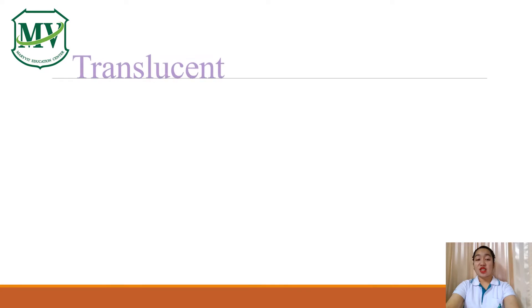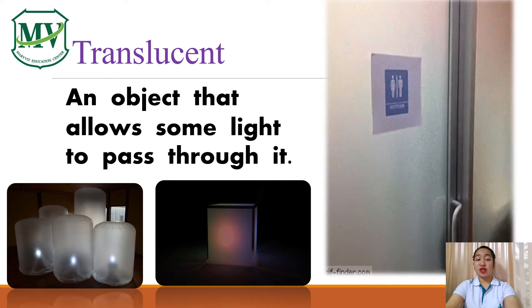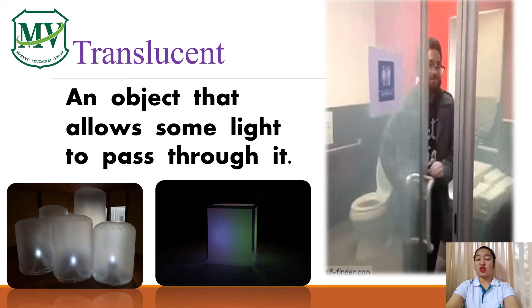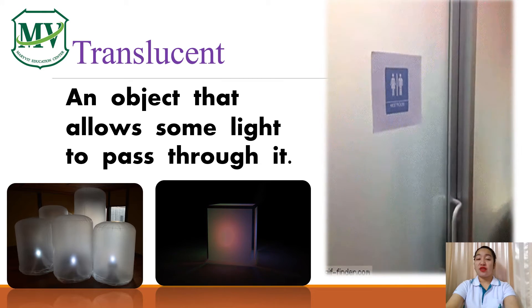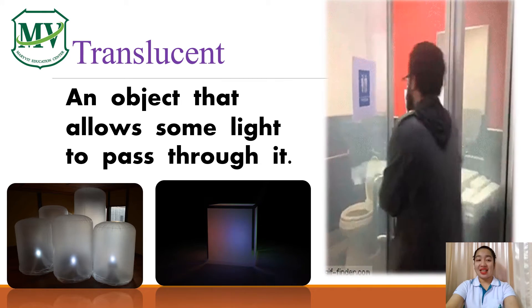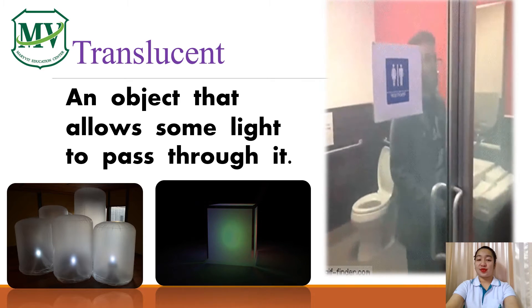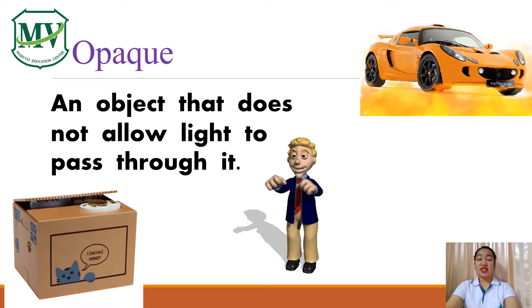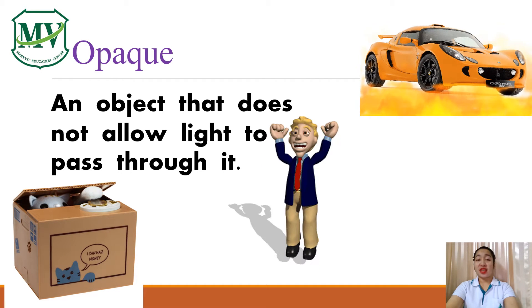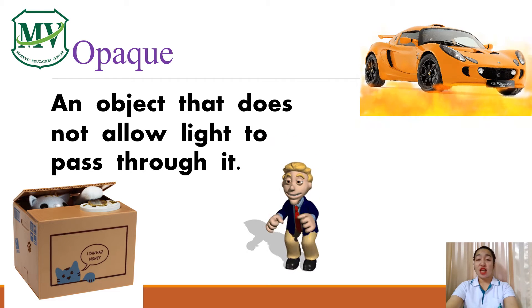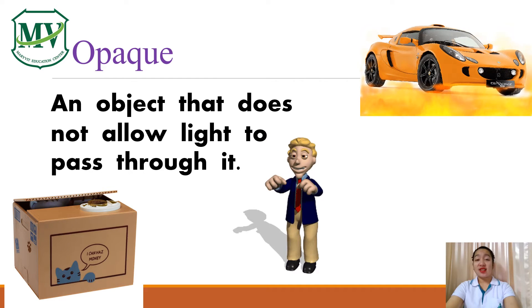When we say translucent, it is an object that allows some light to pass through it. Examples are frosted glasses. Next, opaque. Opaque is an object that does not allow light to pass through it. Examples are box, human, or car.